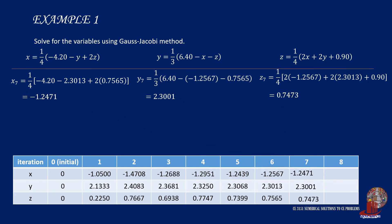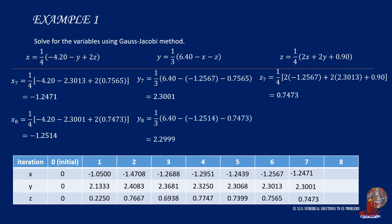Iterating one last step: x₈ is one fourth of negative 4.2 minus 2.3013 plus 2 times 0.7473, giving negative 1.2514. y₈ is one third of 6.4 minus negative 1.2514 minus 0.7473, giving 2.2999. And z₈ is one fourth of 2 times negative 1.2471 plus 2 times 2.3013 plus 0.90, giving 0.7515.